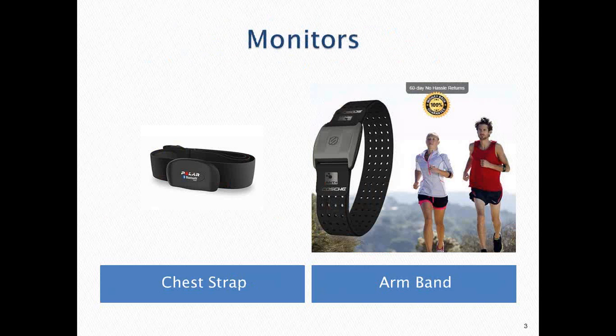So how do these systems work? People have to be wearing some type of device for monitoring heart rate. On the left is a Polar chest strap monitor — the strap goes against your skin, and the transmitter sends a heart rate signal out so it can be interpreted and displayed.